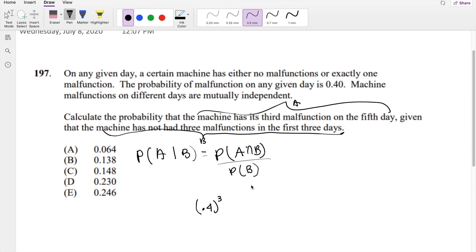0.4 on the second day, and 0.4 on the third day. But if it's not had three malfunctions in the first day, it would just be 1 minus this number. So this is the denominator.